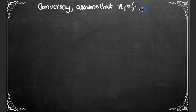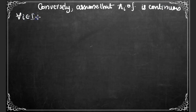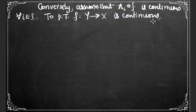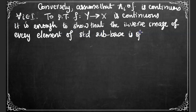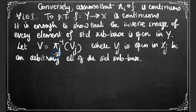Now for the converse part, assume that πᵢ∘f is continuous for each i element of I. To prove that f from Y to X is continuous, it is enough to show that the inverse image of every element of the standard sub-base is open in the domain Y.